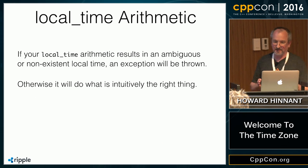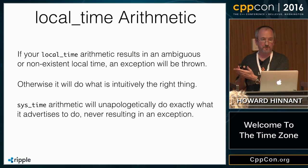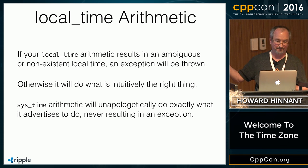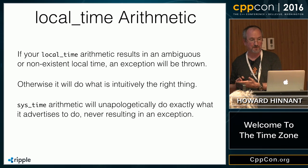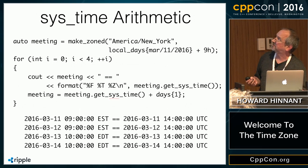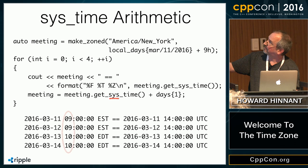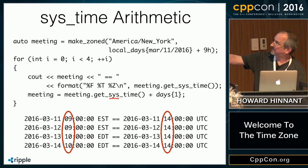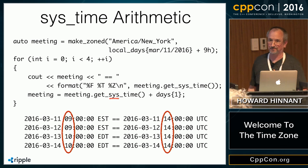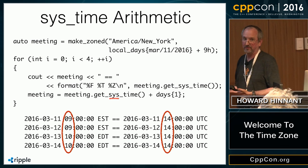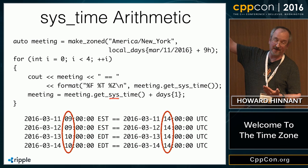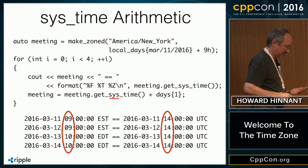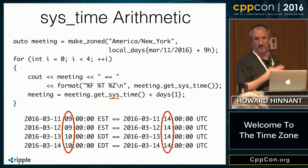This slide explains that: if you choose an ambiguous or non-existent time, you get an exception thrown; otherwise it intuitively does the right thing and adds a day. If you want to do arithmetic in UTC instead, it's just as easy — get sys_time, add one day, and the local time changes while the UTC time stays constant. You have both options. Arithmetic in UTC can never throw an exception because there's always a UTC time to land on — you're never going to land on a UTC time that is ambiguous or non-existent. And that's why UTC is really more than just a time zone; it's an international timekeeping standard.